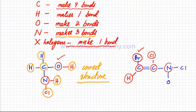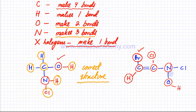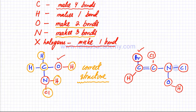Looking at nitrogen: it's supposed to make three bonds, and it has one bond here, one here, and one here — a total of three bonds, so nitrogen is correctly drawn. Looking at oxygen: it's supposed to make two bonds but only has one bond. So we can make another bond with hydrogen to complete oxygen's bonds. Hydrogen is supposed to make one bond and it's doing that. Chlorine is a halogen making one bond — also correct.